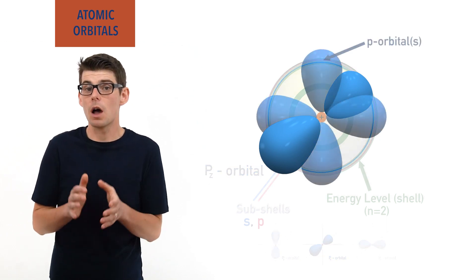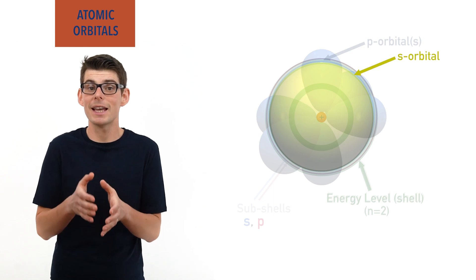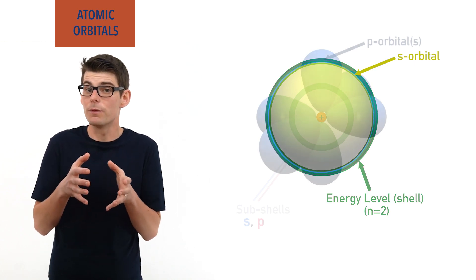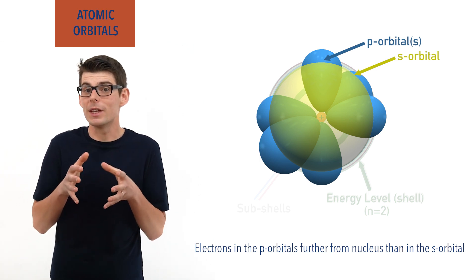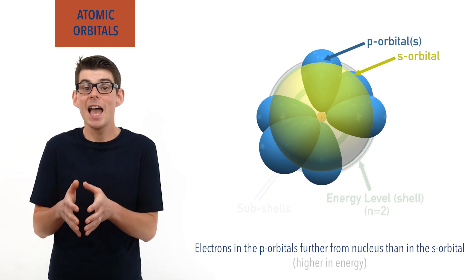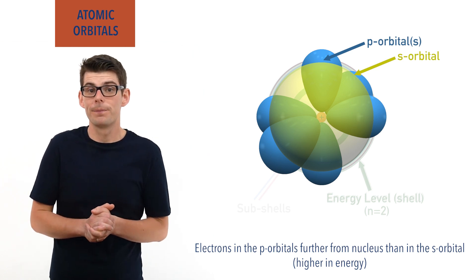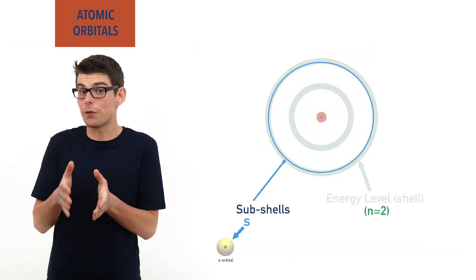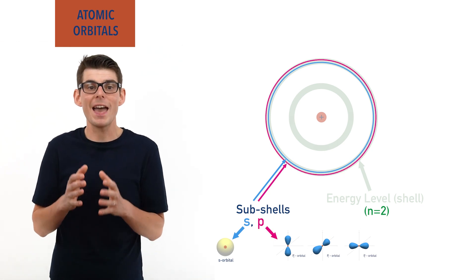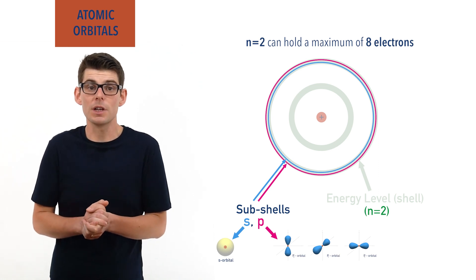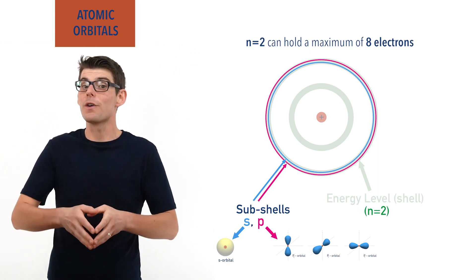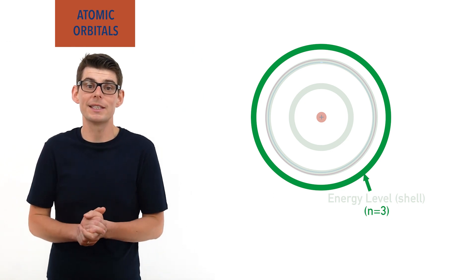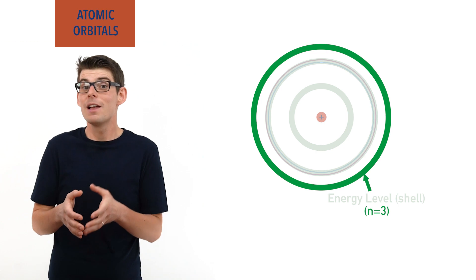Each of the P orbitals has the exact same shape and energy, just with a different orientation in space — effectively each one points in a different direction, all at 90 degrees to each other. They are labeled as Px, Py and Pz, based on the axes they lie in: X, Y and Z. The three P orbitals are arranged around the S orbital that is also in the second energy level, and as a result most of the orbital shape ends up just a little bit further away from the nucleus compared to the S orbital, making the electrons inside slightly higher in energy and less stable. As the second energy level then has four orbitals — one S orbital in the S subshell and three P orbitals in the P subshell — it can hold a maximum of eight electrons.